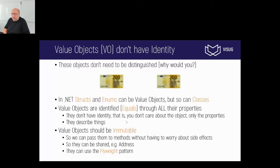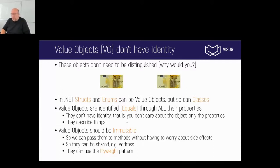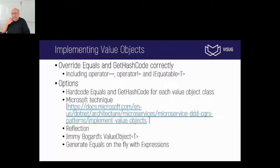Value objects have another concept: they generally should be immutable. That makes it very easy to share these objects, pass them along, and you can do optimizations generally known as the flyweight pattern. I'm not going to talk about immutability, but I do want to talk about equality — specifically, how can I implement equals?